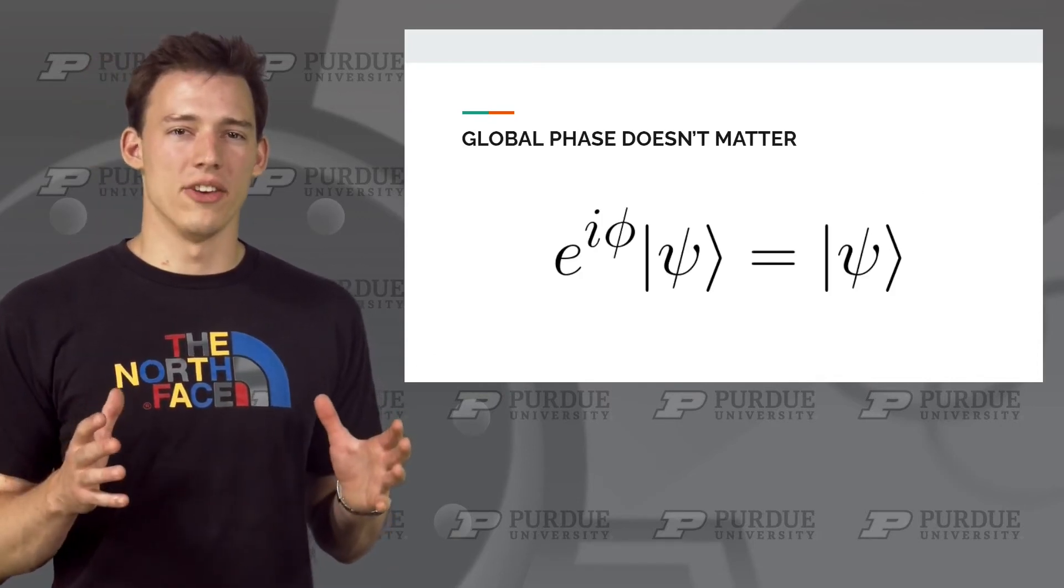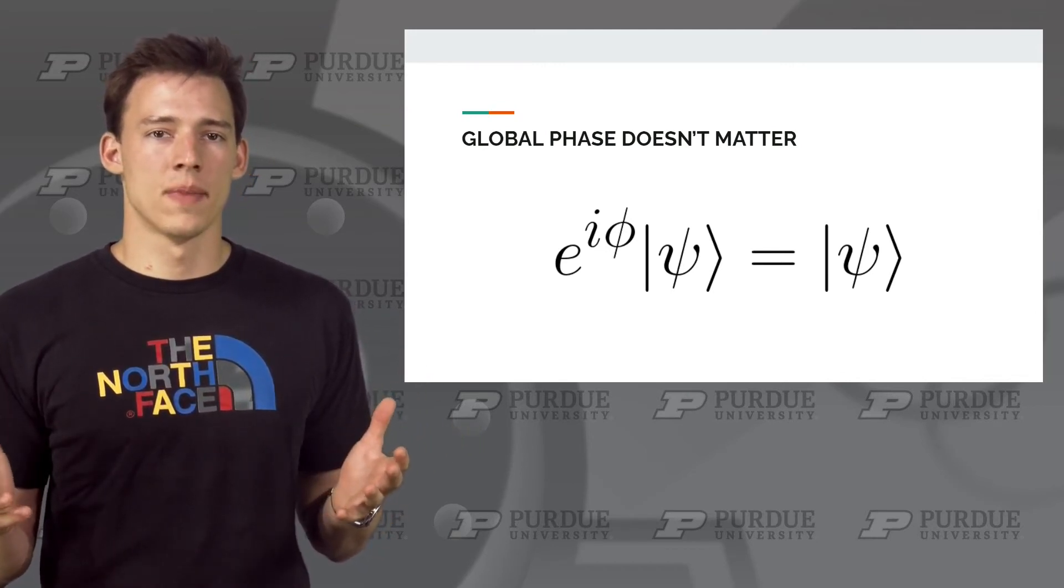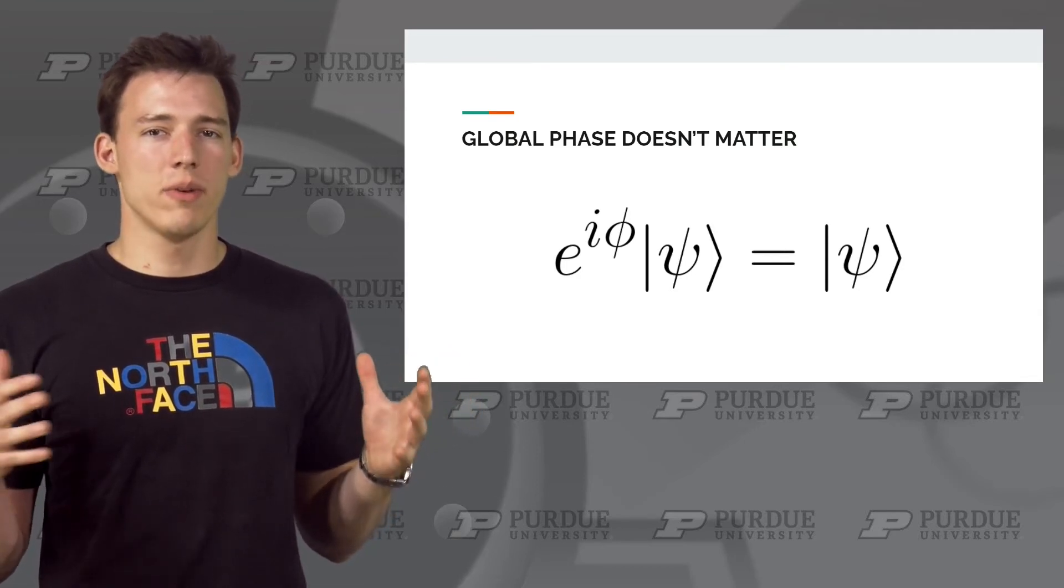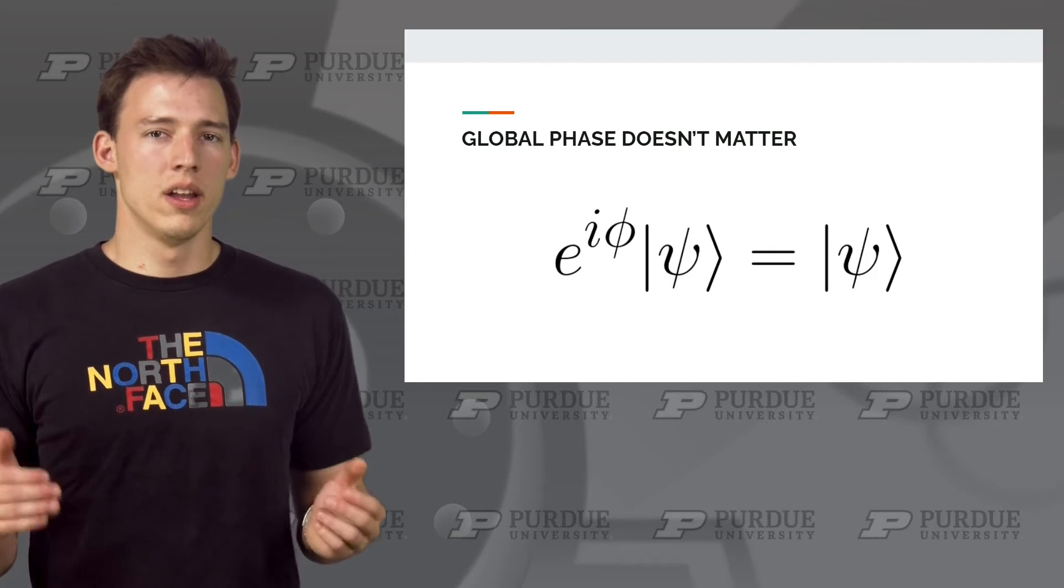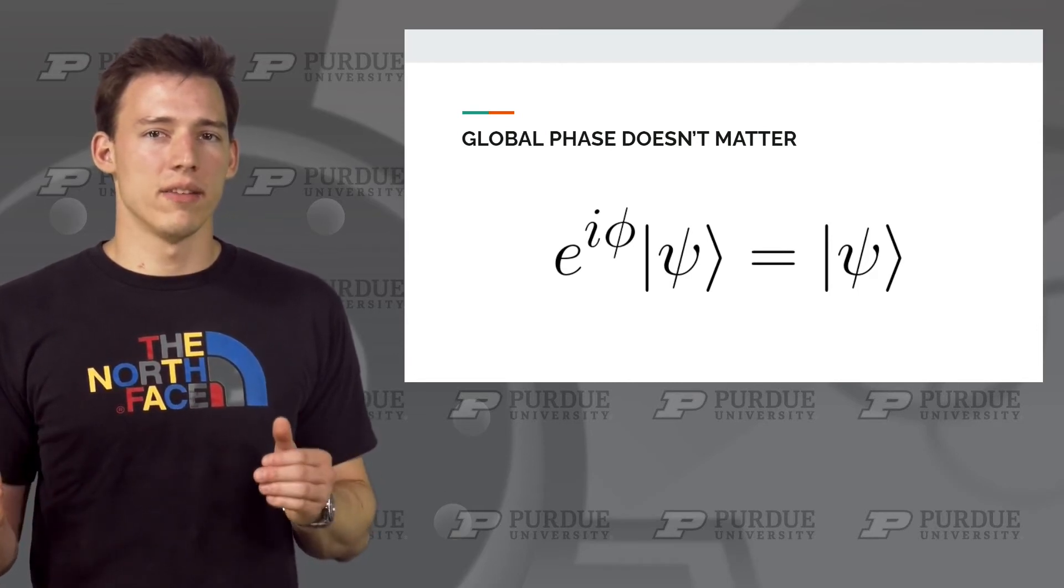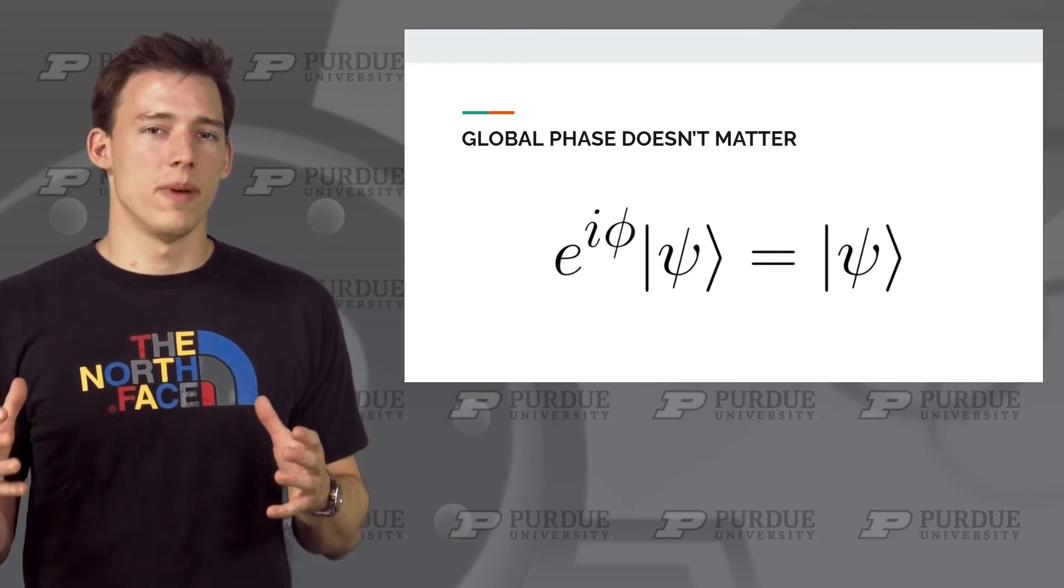Instead of just a negative value, we are now considering a phase to be some value of e to the i phi. The reason we can think of phase like this is because as we vary phi, e to the i phi goes from 1 to negative 1, negative 1 to i, i to negative i, and then back to 1. So there's always just a phase factor based on our phi.